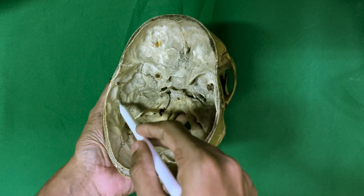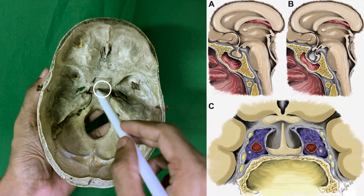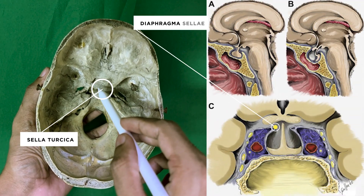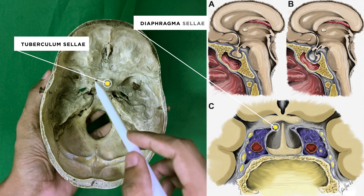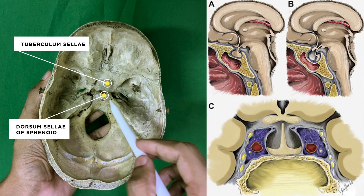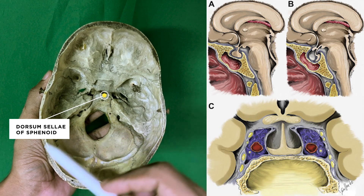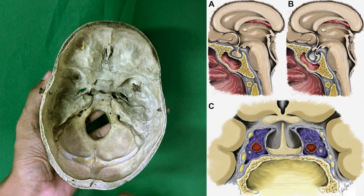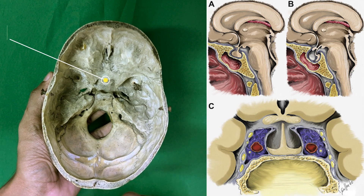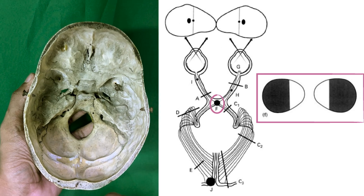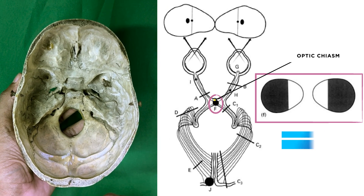The pituitary gland lies in its fossa, the sella turcica, with the diaphragma sellae above it, the tuberculum sellae in front of it, and the dorsum sellae behind. A pituitary tumour arising upwards presses on the optic chiasma, which lies above the sulcus chiasmaticus, causing loss of vision of the temporal field, which is known as bitemporal hemianopia.